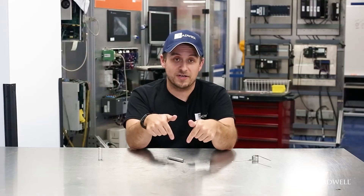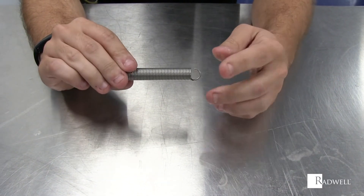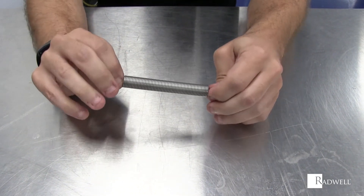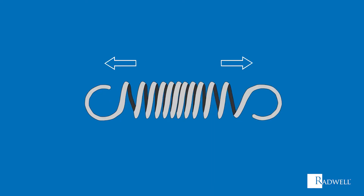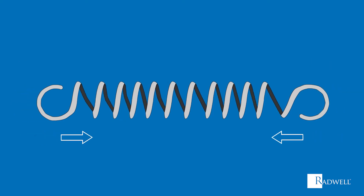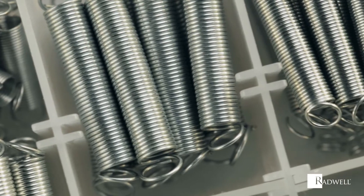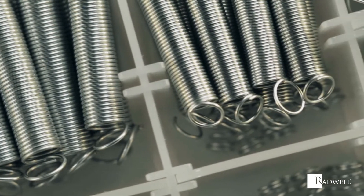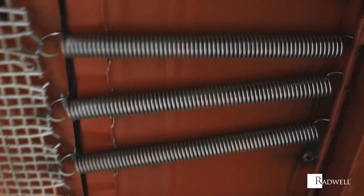An extension spring is a helically coiled wire designed to provide an opposing force when stretched. Extension springs have loops or hooks on their ends to be attached to components that need to be held together. When the mechanisms they are attached to begin to separate, the springs will try to bring them back together, storing the energy through the hooks and loop. Extension springs are found primarily in manufacturing applications where an opposing force is required by two components, along with everyday applications like a garage door or a trampoline.